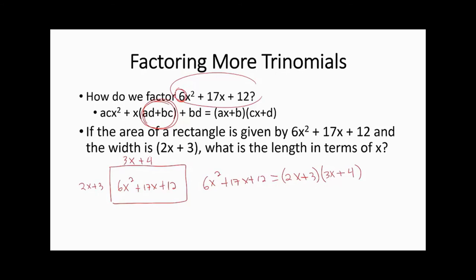How does the general formula come into play? Notice that we can rewrite this using A, B, C, D where A is 2, B is 3, C is the x-coefficient of the second factor, and D is 4. A times C gives 2 times 3x squared, A times D gives 8x, B times C gives 9x — and 8 plus 9 is 17 — plus B times D. The linear term is A times D plus B times C. If you don't remember it, just use trial and error and you'll develop a good sense.